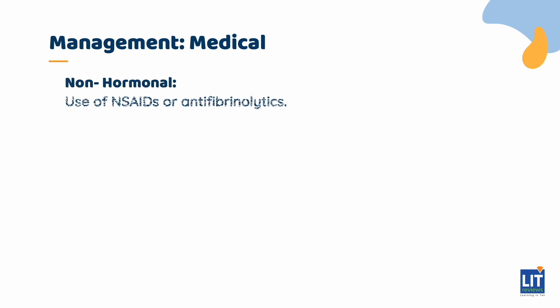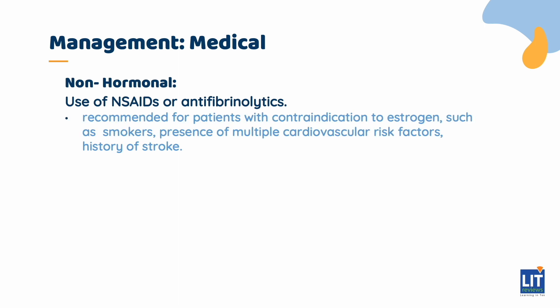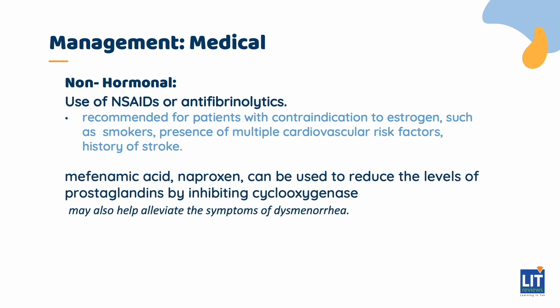Non-hormonal treatments include the use of NSAIDs or antifibrinolytics. Non-hormonal treatments are recommended for patients with contraindications to estrogen, such as smokers, presence of multiple cardiovascular risk factors, or history of stroke. NSAIDs such as mefenamic acid and naproxen can be used to reduce prostaglandin levels by inhibiting cyclooxygenase. Their analgesic effects may also help alleviate symptoms of dysmenorrhea. Antifibrinolytics are another option; their most common side effects are nausea and vomiting, and they are not shown to increase the risk of thromboembolism.